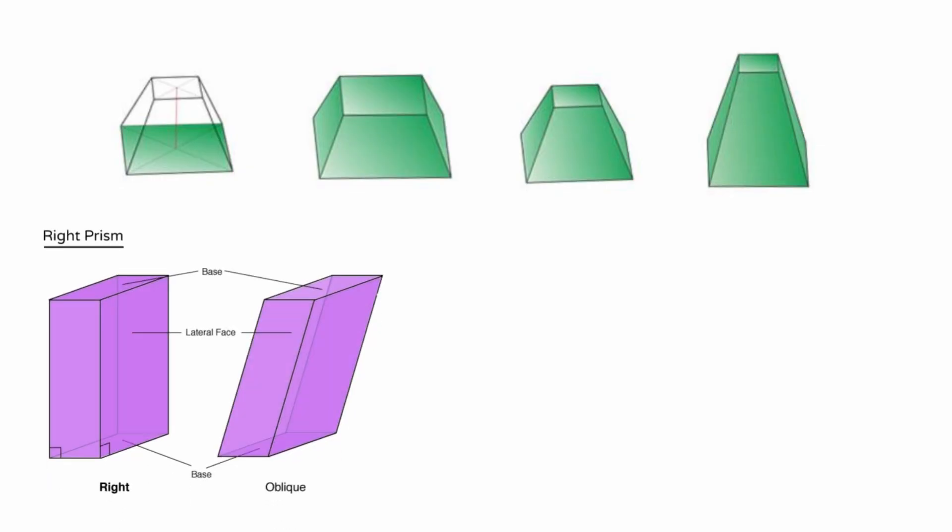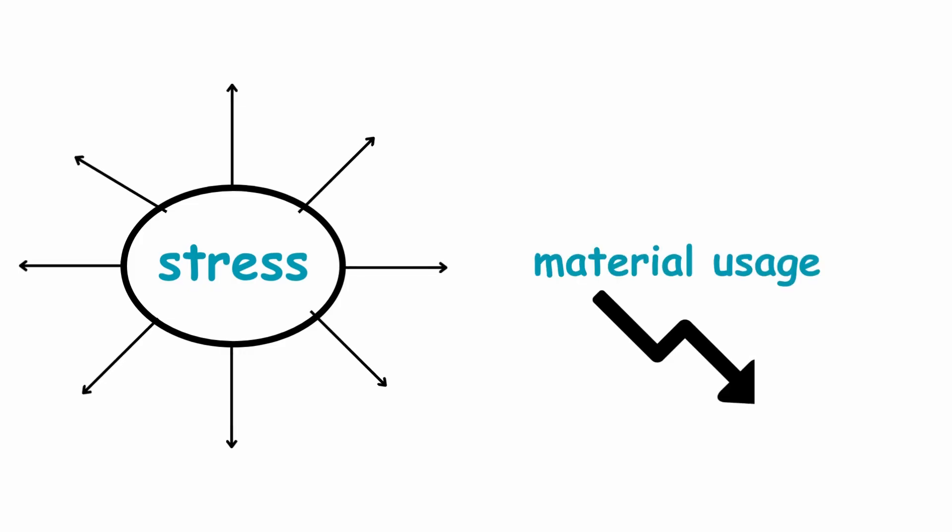In practical applications, architectural models and functional supports employ right prisms and truncated pyramids, as they efficiently distribute stress and minimize material usage without compromising stability.